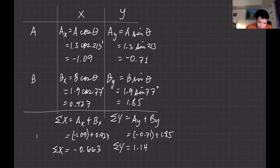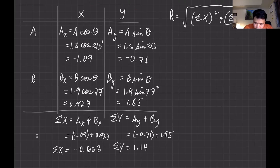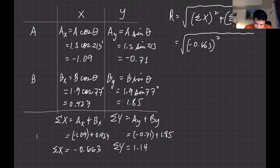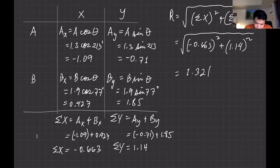To determine the resultant R, the formula is the square root of (summation of x squared plus summation of y squared). Substituting: square root of (negative 0.663 squared plus 1.14 squared). You should get an answer of about 1.32 kilometers. So the resultant magnitude is 1.32 kilometers.